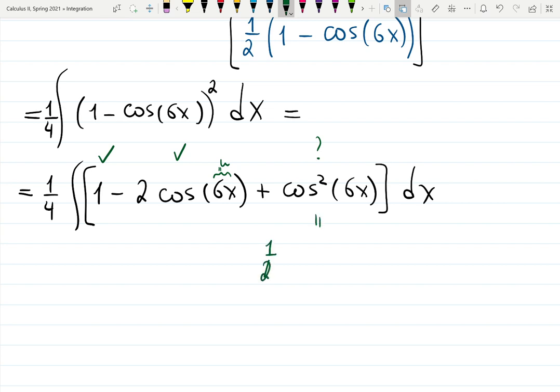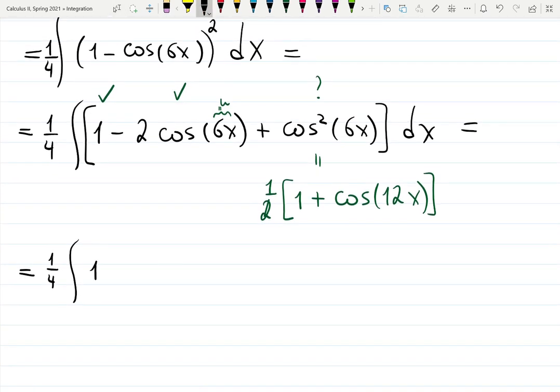Cosine squared can be written as again one half, then it's going to be 1 plus or minus. Since cosine likes cosine, it's going to be cos plus cosine. And now instead of 6 is going to be 12x. So we're ending with, let's carefully collect all the coefficients: one quarter integral of 1 minus 2 cos(6x) plus one half plus one half cos(12x) dx.